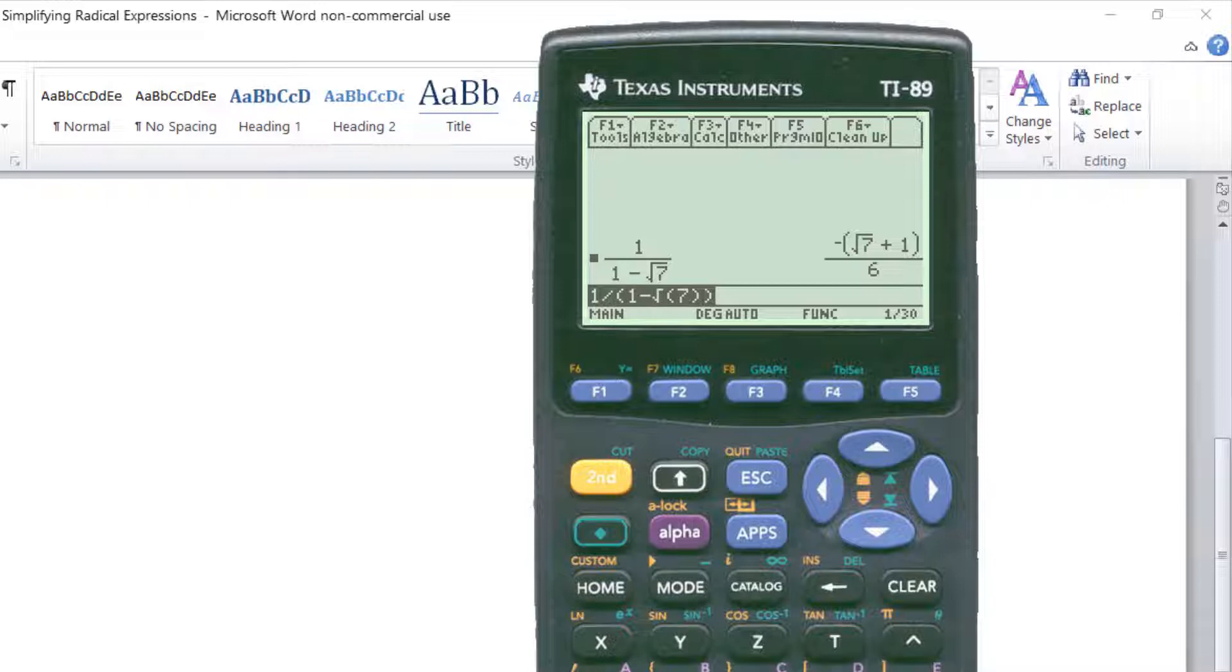And we get minus the square root of 7 plus 1. I could write that as minus 1 minus the square root of 7 all over 6. Well I could leave it in that form right there. It simplifies. We got a radical in the numerator but it's in simplified form. So that's all we have to do there.